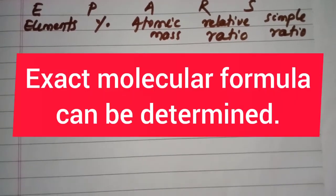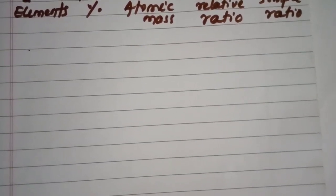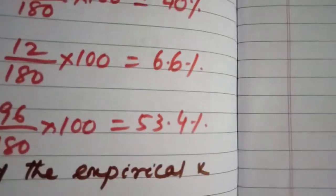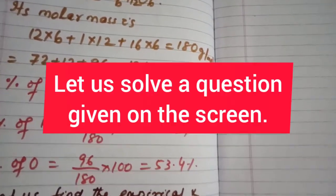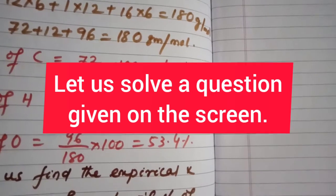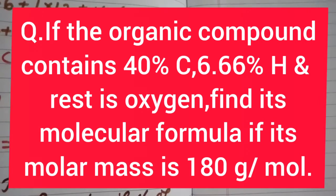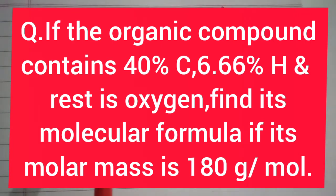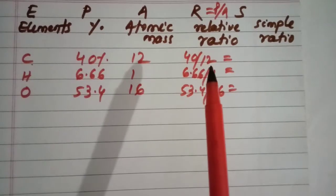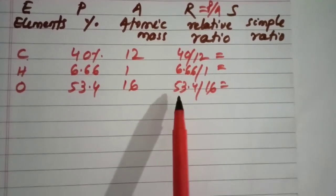In the previous part, you found that in glucose the percentage of carbon is 40%, percentage of hydrogen is 6.6%, and percentage of oxygen is 53.4%, and the molecular formula is C6H12O6. Here, we will say that an organic compound has 40% carbon, 6.6% hydrogen, and the rest is oxygen, with a molar mass of 180. The elements are C, H, and O. The relative ratios are found by dividing percentage by atomic mass: 40 by 12, 6.6 by 1, and 53.4 by 16.